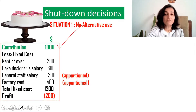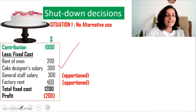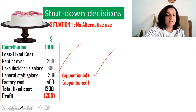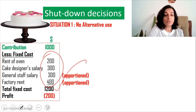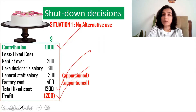The contribution from sale of cakes is $1,000. The rent of the oven is $200, and the oven is exclusively used for making the cakes. The cake designer's salary is $300, and you have apportioned costs: general staff salary of $300 and apportioned factory rent of $400. So the total fixed cost amounts to $1,200, giving a net loss of $200.